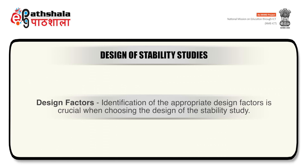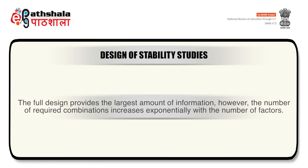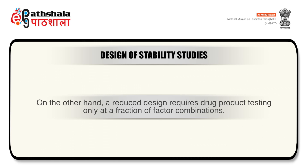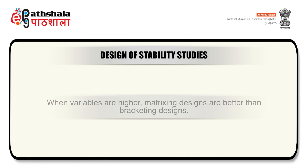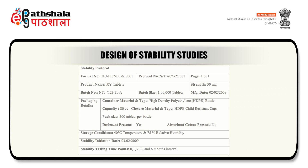Design factors: identification of the appropriate design factors is crucial when choosing the design of the stability study. The full design requires testing the drug product for all factor combinations and at all time periods, and provides the largest amount of information. However, the number of required combinations increases exponentially with the number of factors. On the other hand, a reduced design requires drug product testing only at a fraction of factor combinations. When variables are higher, matrixing designs are better than bracketing designs. Failure to identify a relevant design factor may cause a significant delay in the stability study completion. A design of stability study protocol is shown in the figure on your screen.